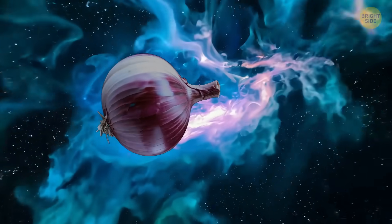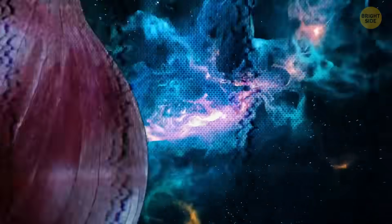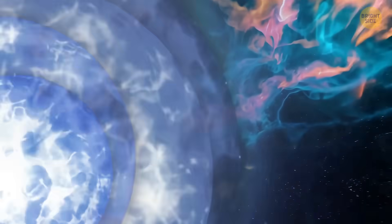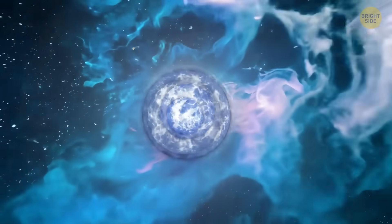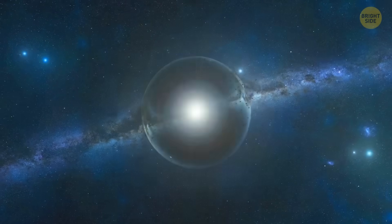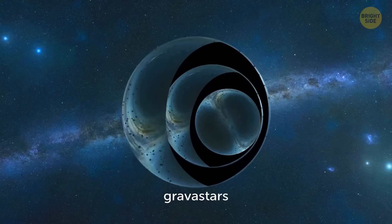Scientists think there might be a huge onion chilling somewhere out there in space. Not an actual one, but something even crazier. These are stars stacked inside each other, layer upon layer. These fascinating objects called gravastars could even be cousins of black holes.